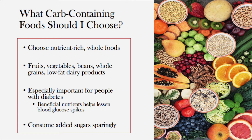It's important for people with diabetes to focus on choosing carbohydrates from nutrient-rich whole foods such as fruits, vegetables, beans, whole grains, and dairy products such as low-fat or fat-free milk and yogurt. While everyone should choose these types of carbs, it is even more important for people with diabetes due to their beneficial nutrients. These nutrients lessen the rise in blood glucose — one key nutrient being fiber, found in fruits, vegetables, and whole grains. Foods and beverages with added sugars should be consumed sparingly regardless of a diabetes diagnosis.